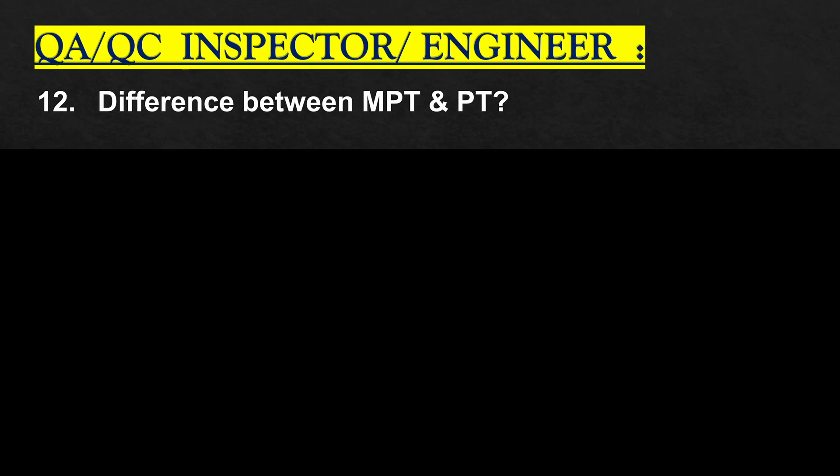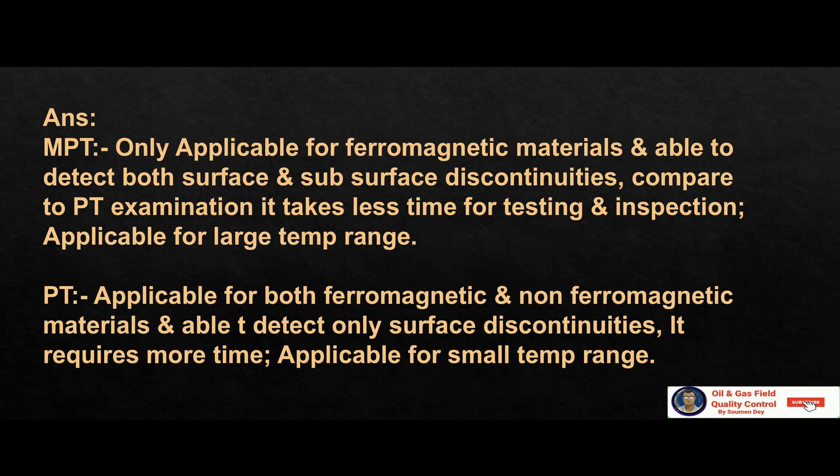What is the difference between MPT and PT? MPT — magnetic particle testing — is only applicable for ferromagnetic materials and is able to detect both surface and subsurface discontinuities up to a maximum of 6 mm. Whereas PT is applicable for both ferromagnetic and non-ferromagnetic materials but is able to detect only surface discontinuities. PT requires more time and is applicable for a small temperature range.